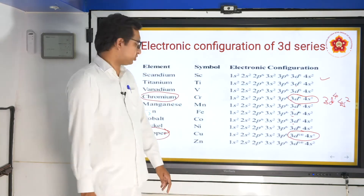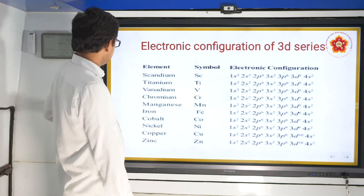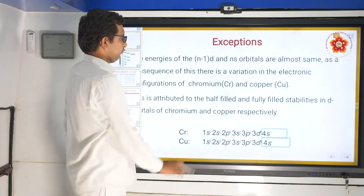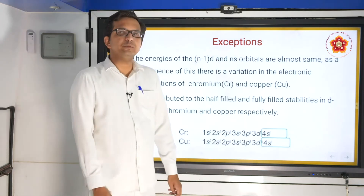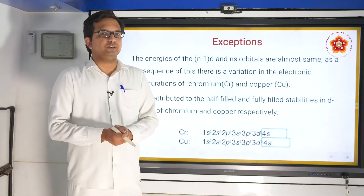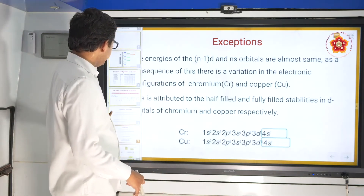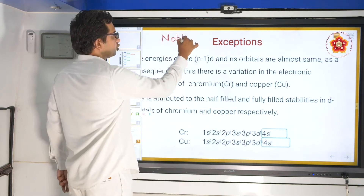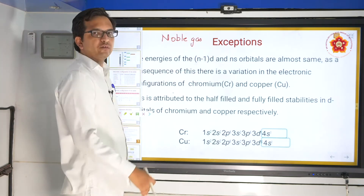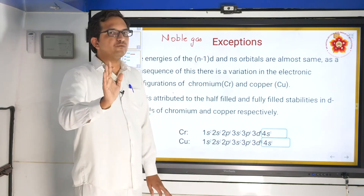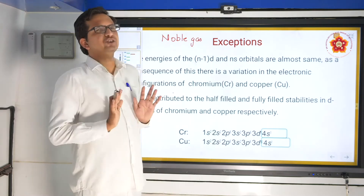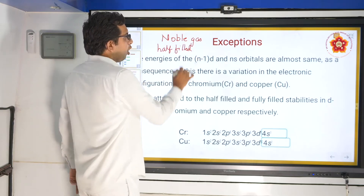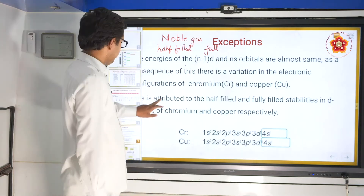Why is this so? The exception for chromium and copper is because of the concept of half-filled and fully-filled orbitals. Stability is governed by three schemes: attaining noble gas configuration, attaining a half-filled system, or attaining a fully-filled system.